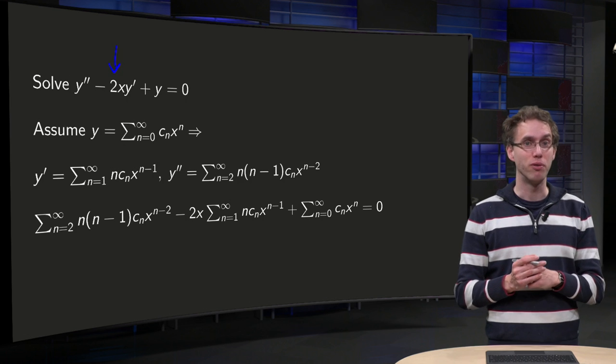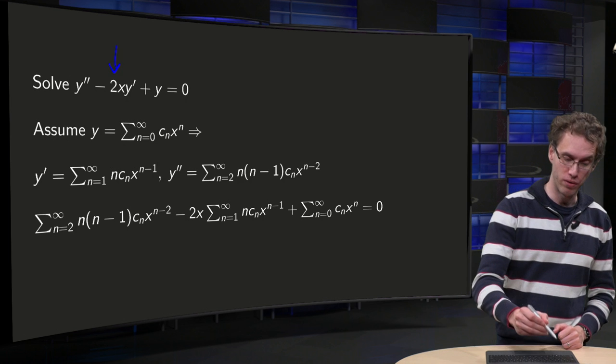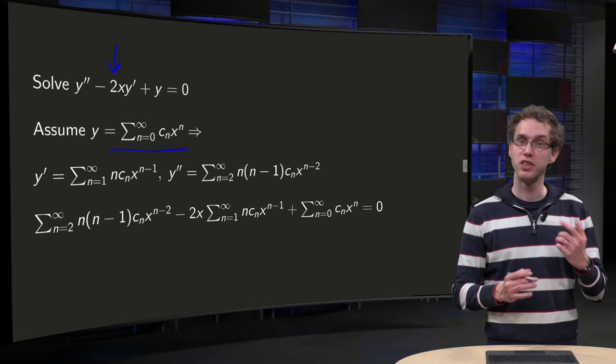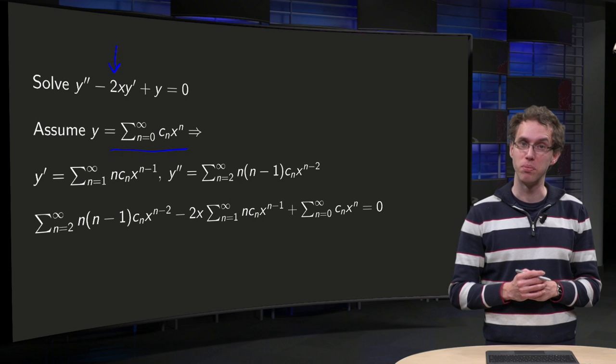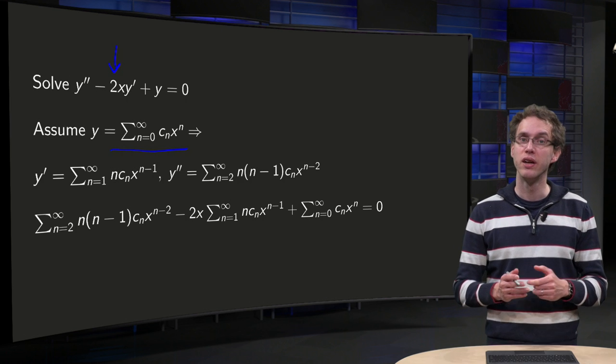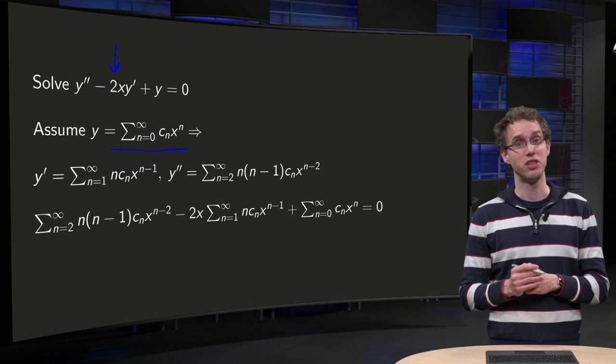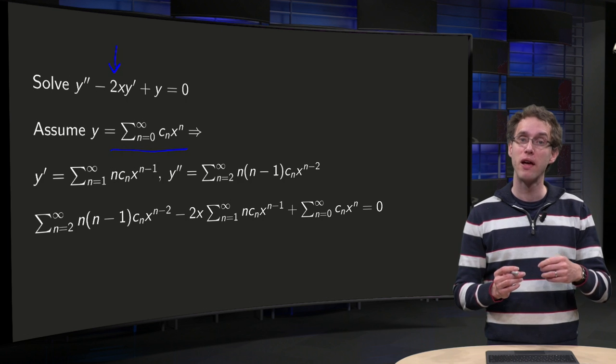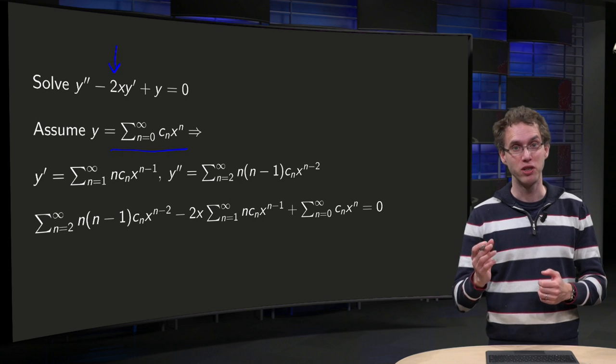And that else will be a power series solution. So we assume y can be written as power series cn times x to the power n, sum n from 0 to infinity. And we want to substitute this answer into our differential equation, so we need y' and y'' as well.